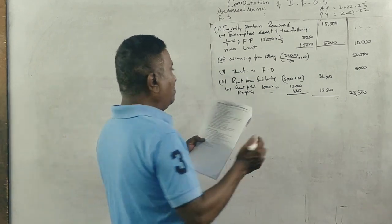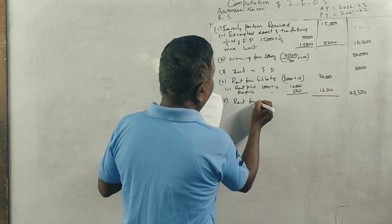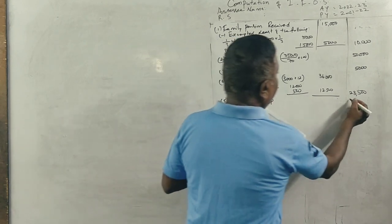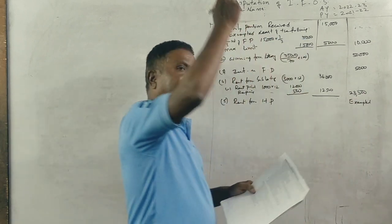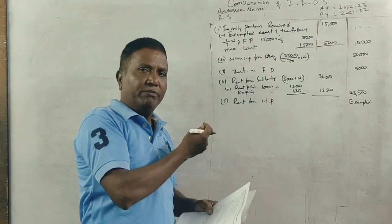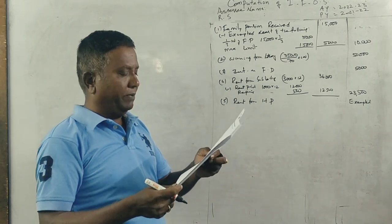Next, rent from house property. Exempted. We charge under the head income from house property but not from other sources. If it is exempted here, it is taxable income from house property.